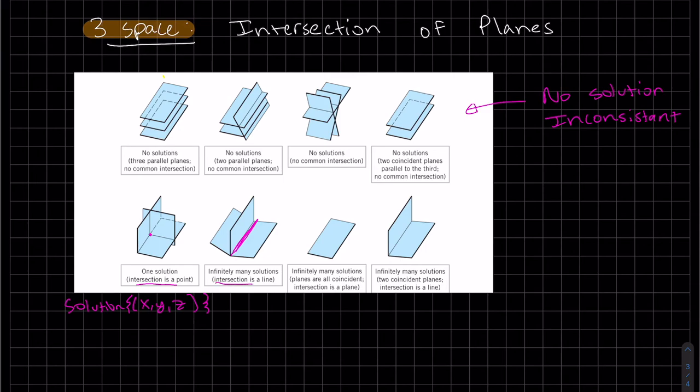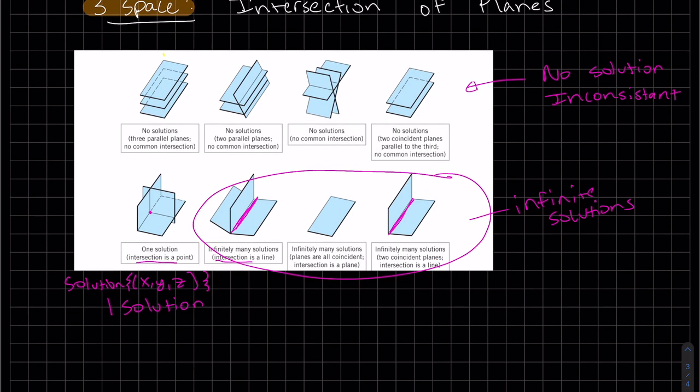We have all three are the same plane. Again, that has the solution is the entire plane. This is this one right here. And then here we have another line that intersects the planes. Two of the planes are the same and one intersection is a line. And on all of these, there's infinite solutions and they are all consistent. This is consistent.